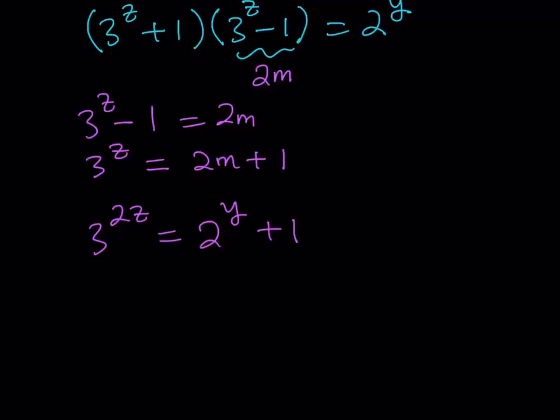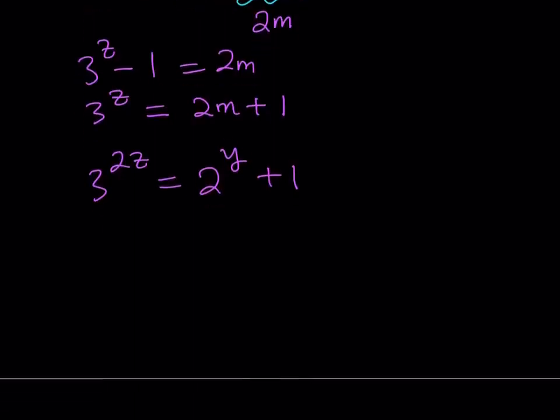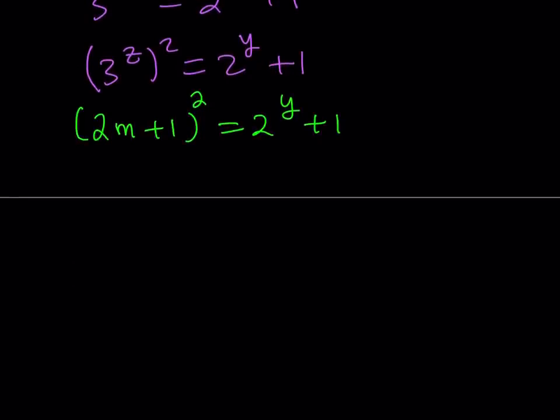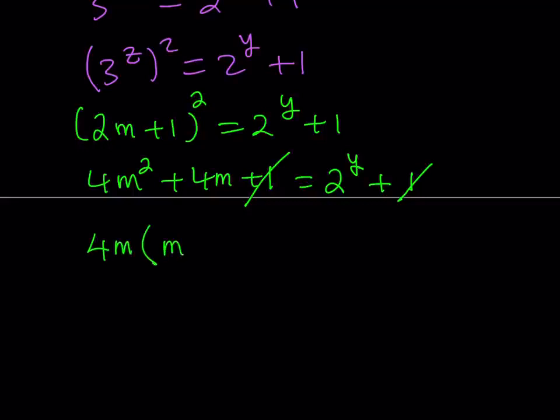Now, I'm going to replace 3 to the power z with 2m plus 1, so this can be written as 3 to the power z squared. Let me write it that way first, and then I'm going to replace 3 to the power z with 2m plus 1. This is (2m + 1) squared, and that equals 2 to the power y plus 1. Now, let's expand this. This gives us 4m^2 + 4m + 1 equals 2 to the power y plus 1. Cancel out the 1 and factor the left-hand side. What do we get? We get 4m multiplied by (m + 1) equals 2 to the power y.